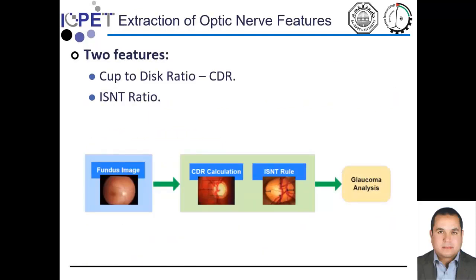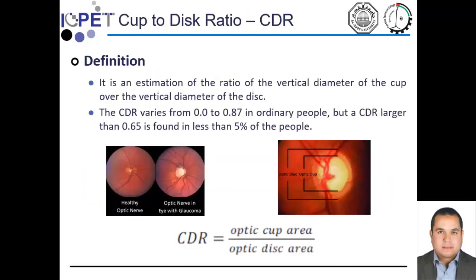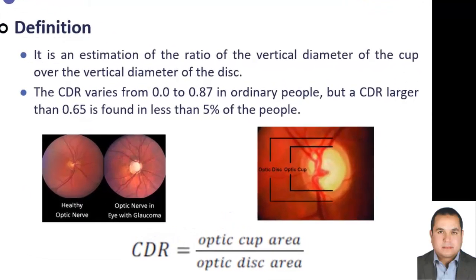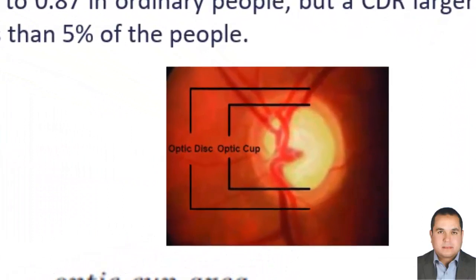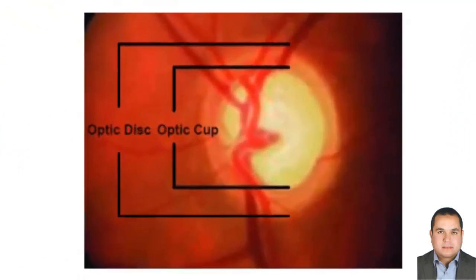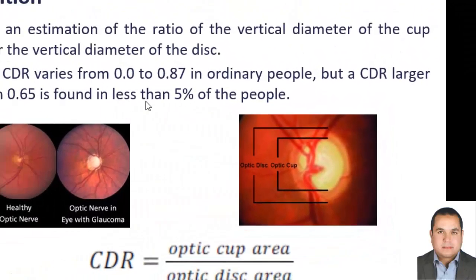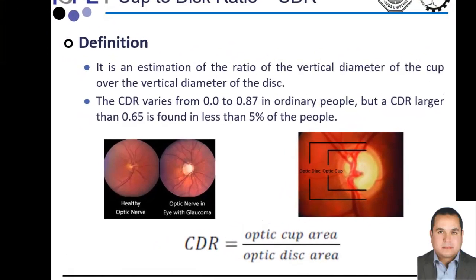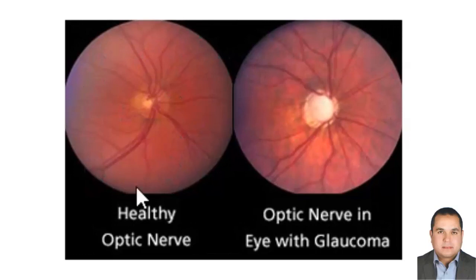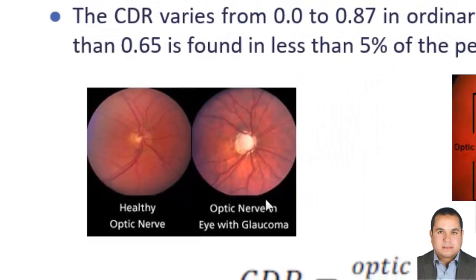Our methodology depends on two main features to detect glaucoma, which are used by doctors: cup-to-disc ratio and ISNT ratio. The cup-to-disc ratio is the ratio between the optic cup area and the optic disc area. In ordinary people it varies from 0 to 0.87. A cup-to-disc ratio greater than 0.65 is considered suspicious for glaucoma. Here you can see the difference between the healthy optic nerve and the optic nerve in an eye with glaucoma.